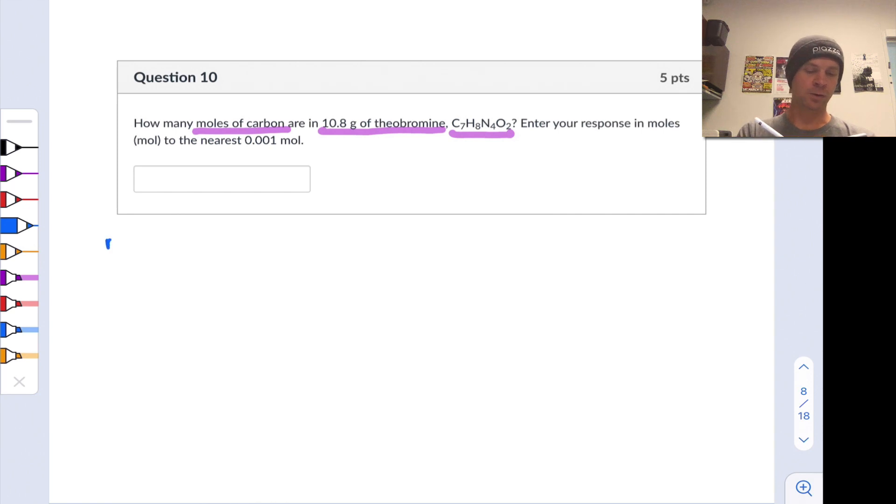So what I know, given what's in the problem, is the mass of theobromine. Let's go ahead and get the formula down, C7H8N4O2. And what I want to know is the moles of carbon in this quantity of theobromine, the number of moles of carbon atoms, the count of the carbon atoms effectively, conceptually is what I want to know.